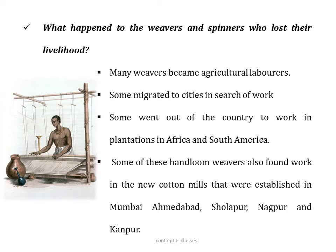Many weavers and spinners who lost their jobs or livelihood became agricultural labourers. Some migrated to cities in search of work, some went out of the country to work in plantations in Africa and South America, and some hand-loom weavers also found work in the new cotton mills established in Mumbai, Ahmedabad, Sholapur, Nagpur, and Kanpur.